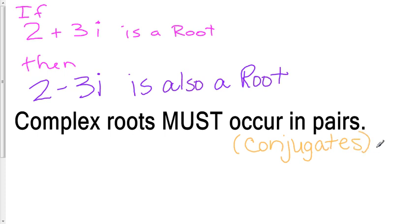If you have a 2 plus 3i, you have a 2 minus 3i. If you have 6i as one root, then there has to be a negative 6i. If there's a negative 5 plus 4i as a root, then there also has to be a negative 5 minus 4i. They always occur in pairs.